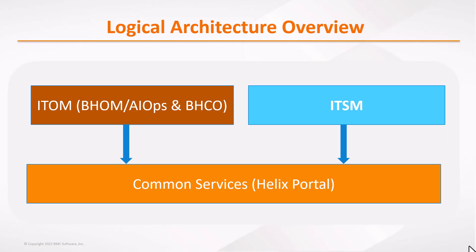Let's look at the logical architectural diagram for BMC Helix On-Prem installation. We see three components: ITSM; ITOM, which includes BHOM, AIOps, and BHCO; and the third is common services, also called Helix Portal. When installing ITSM, common services must be installed first as separate installation options. For ITOM, common services are installed out of the box. There can be installations with only common services and ITSM, or common services with ITOM and ITSM together. The health check tool validates all three of those areas.